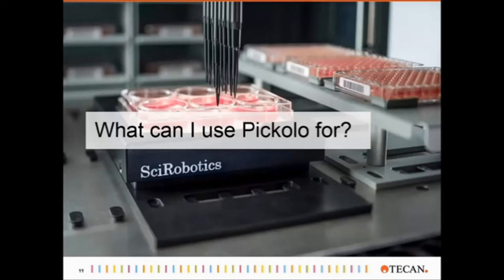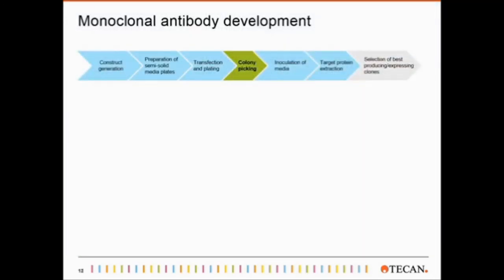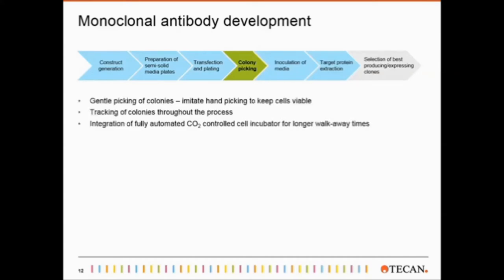So, what can Piccolo be used for? In this section, I would like to show you examples of what our customers do with Piccolo. First, monoclonal antibody development, where basically the whole workflow can be automated from steps of the construct generation to protein extraction. Here it really helps that picking movement can be adjusted and picking can be very gentle in order to keep the cells viable. And because in these applications the number of cells picked is quite high, the tracking of colonies throughout the process becomes essential.